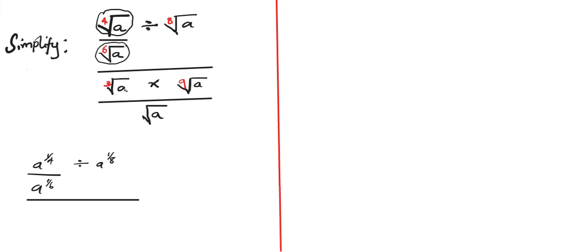Then we have the cube root of a, rewritten as a to the power one over three. Then we have a multiplication sign, then the ninth root of a, rewritten as a to the power one over nine. Then after a division sign we have the square root of a, which is a to the power one over two.